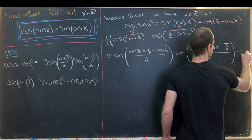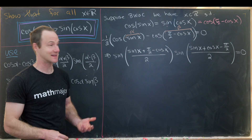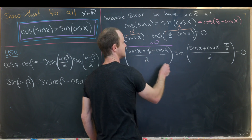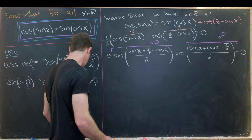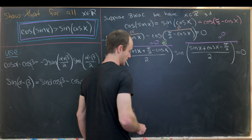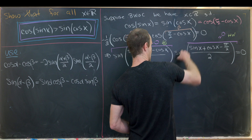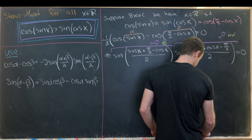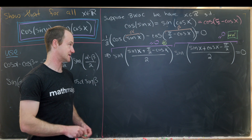We have that product of two sine functions equal to 0. If the product of two real numbers equals 0, at least one of them equals 0. So either the first sine factor is 0, or sine of (x + cosine of x - π/2)/2 is 0. We'll work out the starred case and leave the other as a homework exercise, as it follows almost exactly the same way.